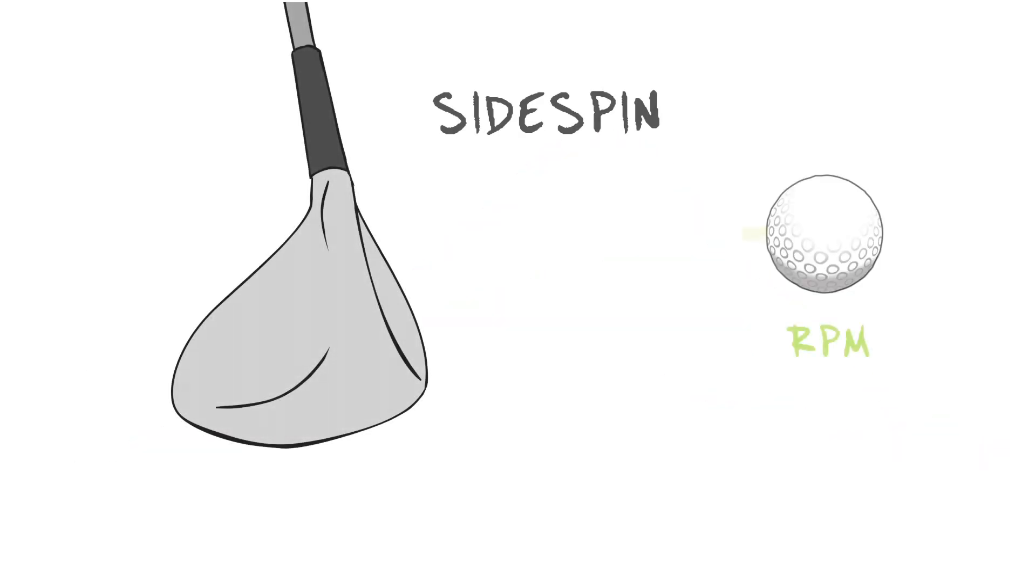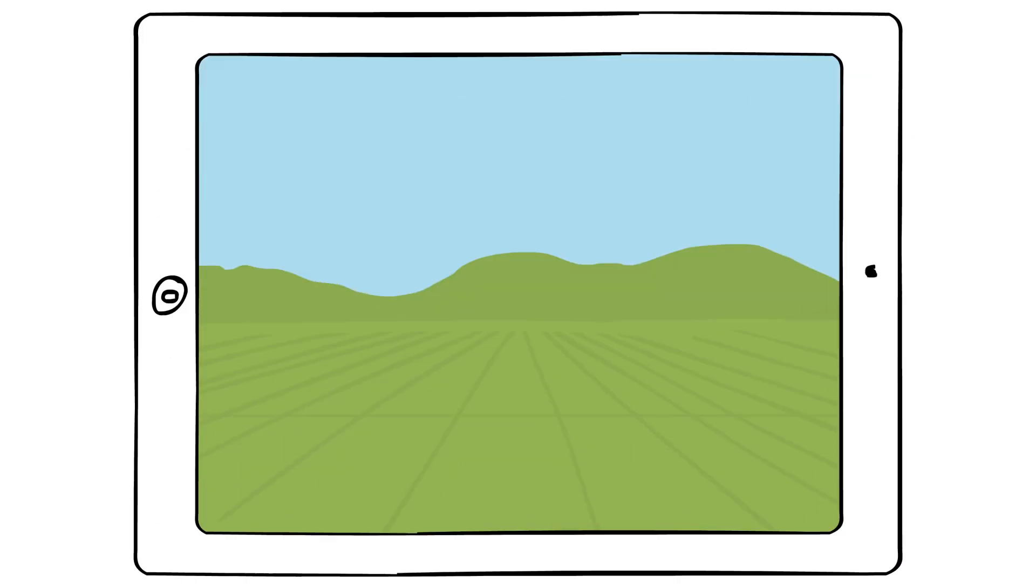Another key element is sidespin. Think of this as the horizontal rotation of the ball in relation to the ground as it leaves your club. Why is it important? It works together with side angle to determine the overall shape of your shot. Whether it was straight, a hook or draw, or a fade or a slice, you typically want to see low sidespin so your ball flies straighter.